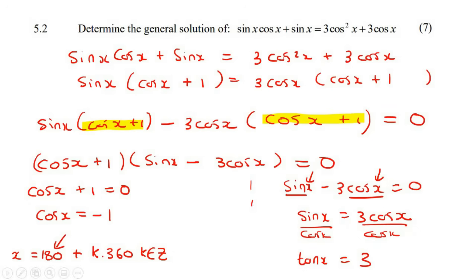Now you have to go to your reference angle. So this is where you'll say shift on a Casio calculator, tan of 3, and if you enter that, you're gonna get 71.57 degrees. So that's your reference angle.